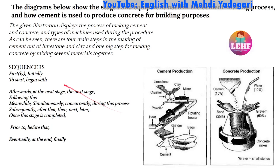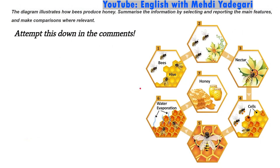So that's it. Two things: sequencers need to be used in writings of cycles and processes, and the voice needs to be passive. Down in the comments, I want you to attempt the picture shown — a cycle from number one all the way to number seven, which is a process of honey production by bees. Write your introduction, write your body paragraph, and I will personally give you feedback. I'll catch you guys in the next one. Good luck.